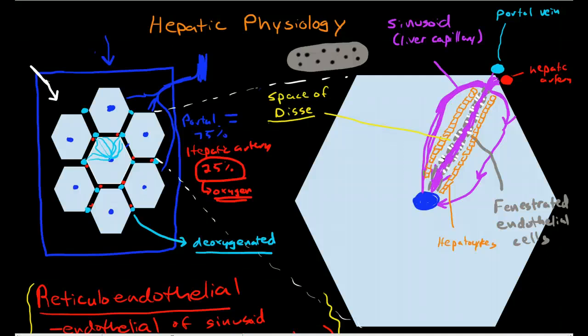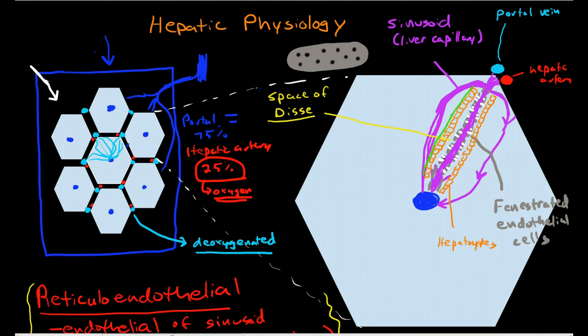Now just behind the hepatocytes is another small little lumen here that is the bile canaliculi. Or the bile canaliculus. One would be a canaliculus, two would be two canaliculi. So anyways they drain, these move in the opposite direction of the blood flow. And they drain back towards the outside of the liver lobule into small bile ducts that are parallel to the portal vein and the hepatic vein. And these gather together into the intrahepatic bile ducts that eventually work their way to the gallbladder.